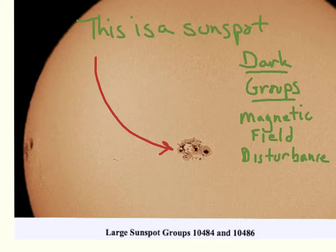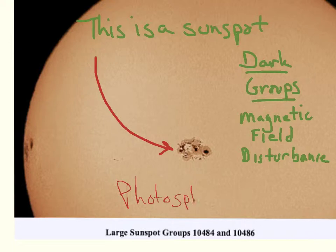What we're looking at here is the surface of the Sun, which is called the photosphere. On the photosphere, sunspots show up as these kind of black, pimple-like splotches. You'll notice there's an inner part that's really black, and then just an area around it that is not quite as dark.